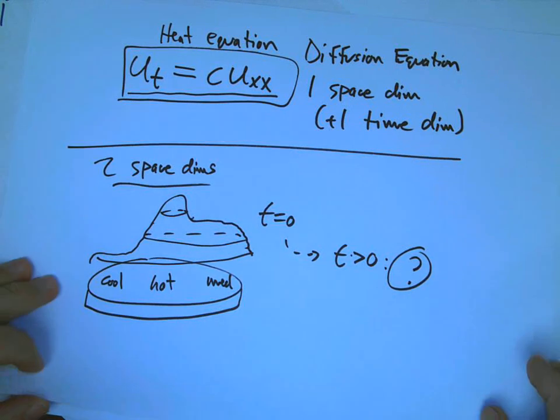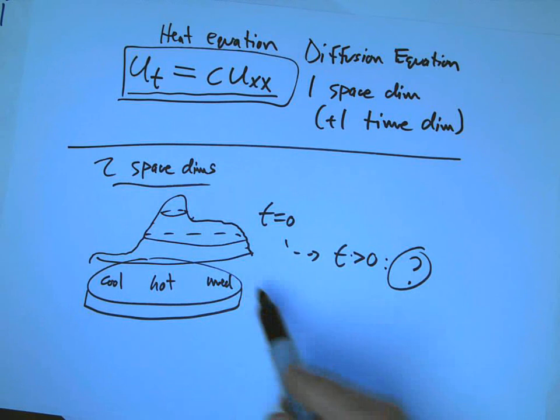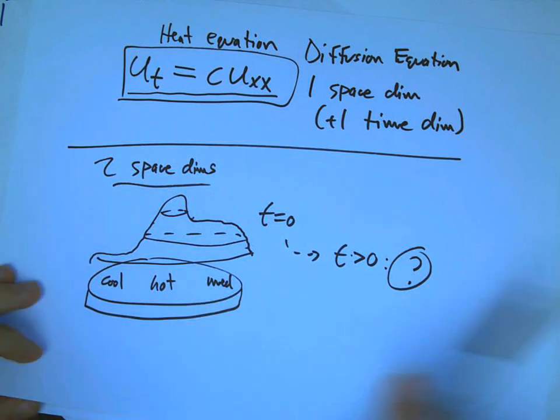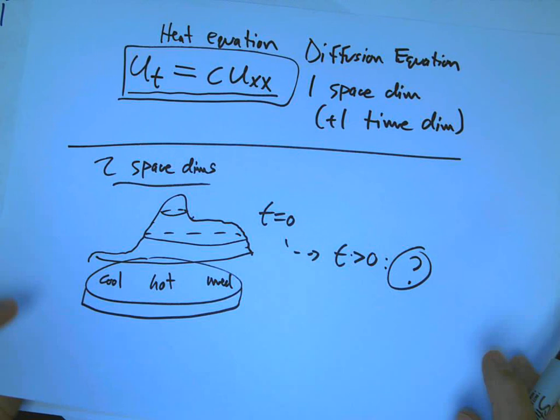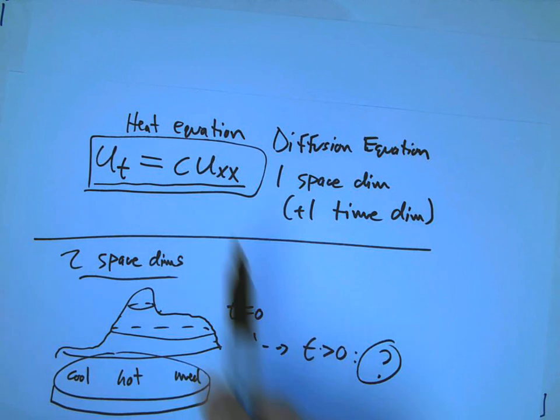It's going to depend on the boundary conditions, whether we're keeping the edges in an ice bath or insulating them or putting them in boiling water. But we want to know, at the least, what is the partial differential equation that governs this? An analogy to this one: derivative in t is proportional to the second derivative in x.